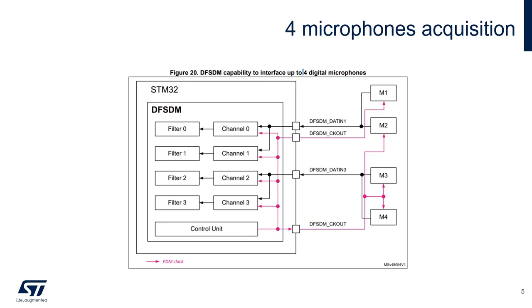Four microphones can be acquired and converted, connecting two couples of microphones to two data lines. In this case, four channels and four filters will be used. In this specific example, two clock pins are used in order to be able to switch between a low power case in which a single microphone is acquired and clocked, and the high performance mode where all four microphones are used.